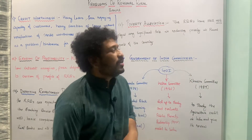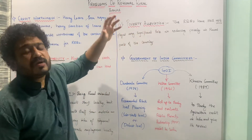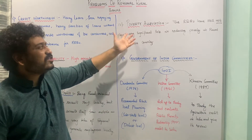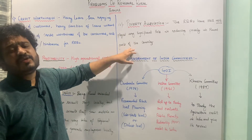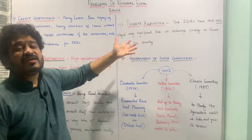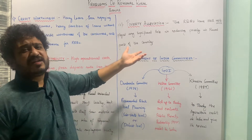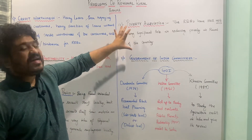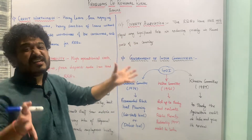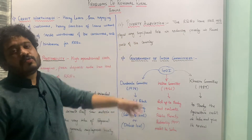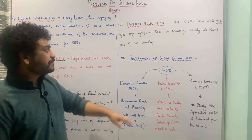The next problem is poverty alleviation. Regional rural banks were supposed to contribute to poverty alleviation by providing employment, cheap credit, and other services to the rural populace — for example, credit for starting a small infrastructural plant or agriculture and allied activities. Unfortunately, this has not happened significantly, and no major change in rural poverty levels is observed.